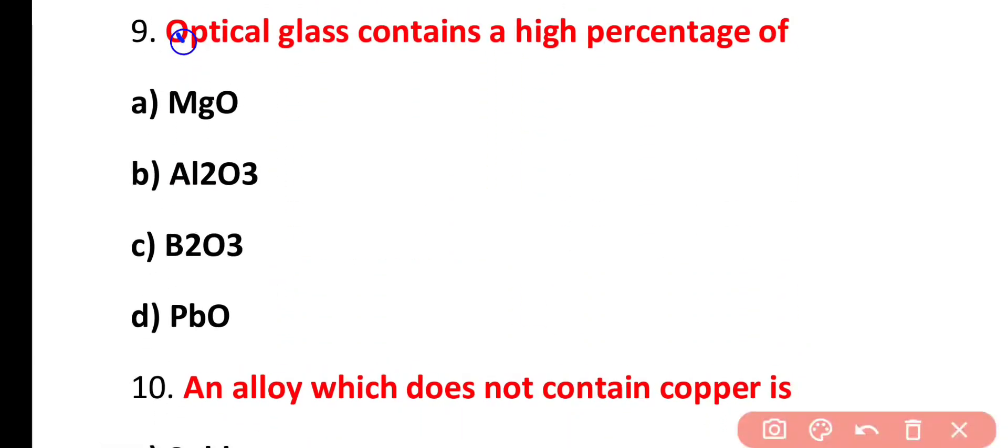Question number 9. Optical glass contain high percentage of MgO2, MgO2, MgO2O3, PB2O3 or lead oxide. Correct answer is option C. Optical glass contain high percentage of boron trioxide.